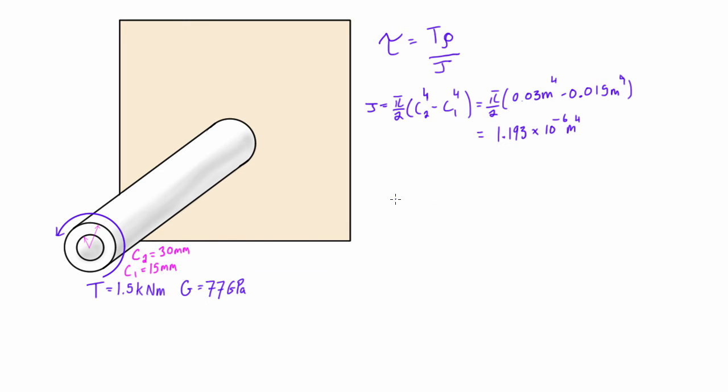Alright, so now we can go ahead and calculate our max shear. For τ_max we're going to have 1.5 kilonewton meters, that is our internal torque, and then we have 0.03 meters, because we know that our max shear will occur at that max distance at c2. So we plug in c2 there and then we throw this all over J.